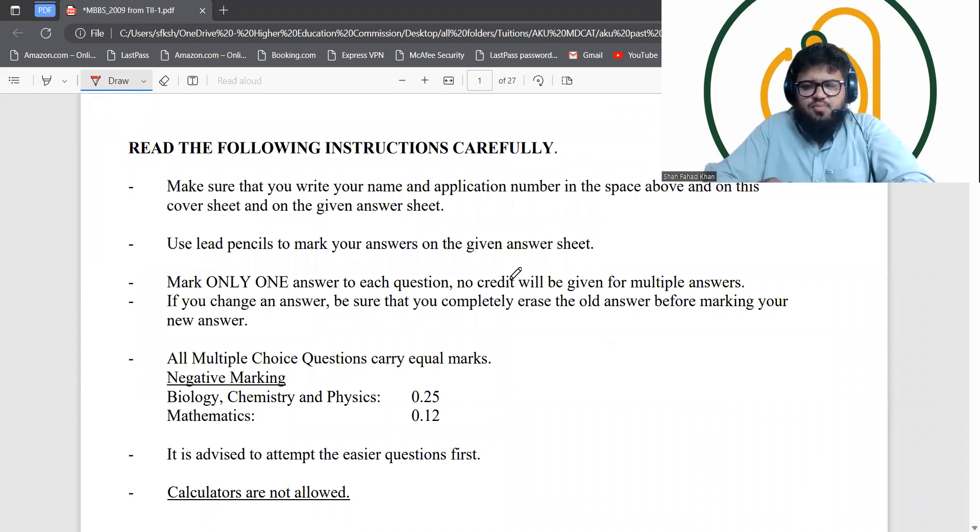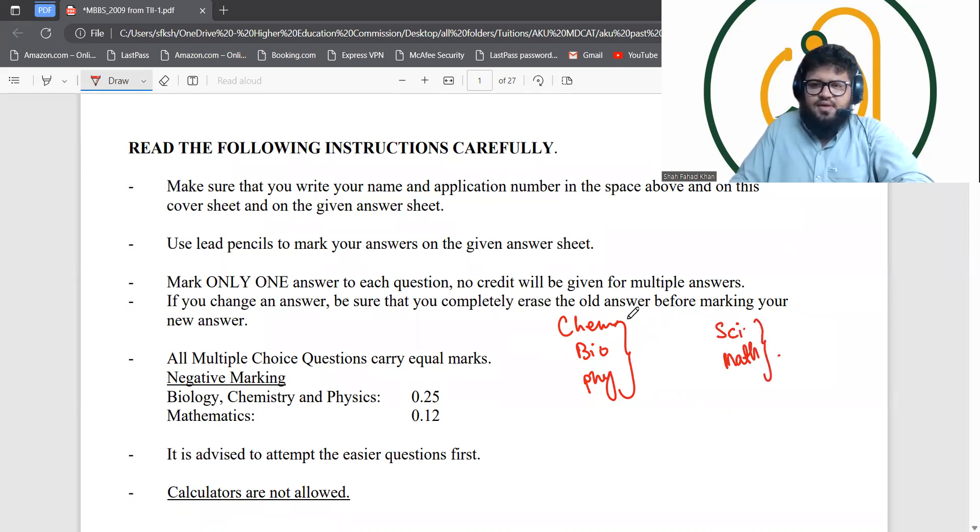What you need to do is pass both sections individually. Chemistry, biology, and physics collectively you have to pass. The science and math reasoning part needs to be passed separately. The cutoff here is different, the cutoff here is different.